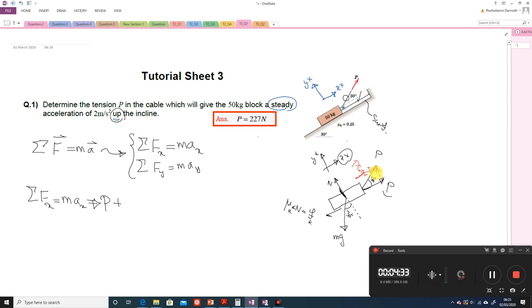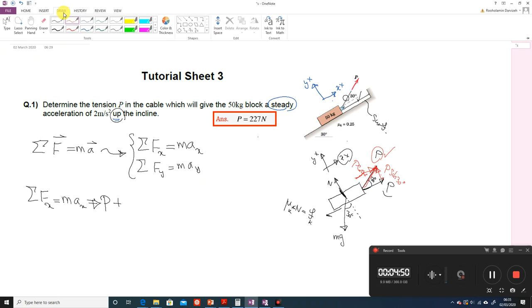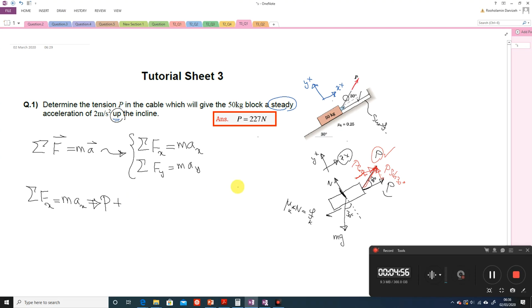And this one which is P sin 30°. These are the components of the second cable force. The horizontal component of the second cable force is positive as well, P cos 30°. Another horizontal force which we have is f_k.